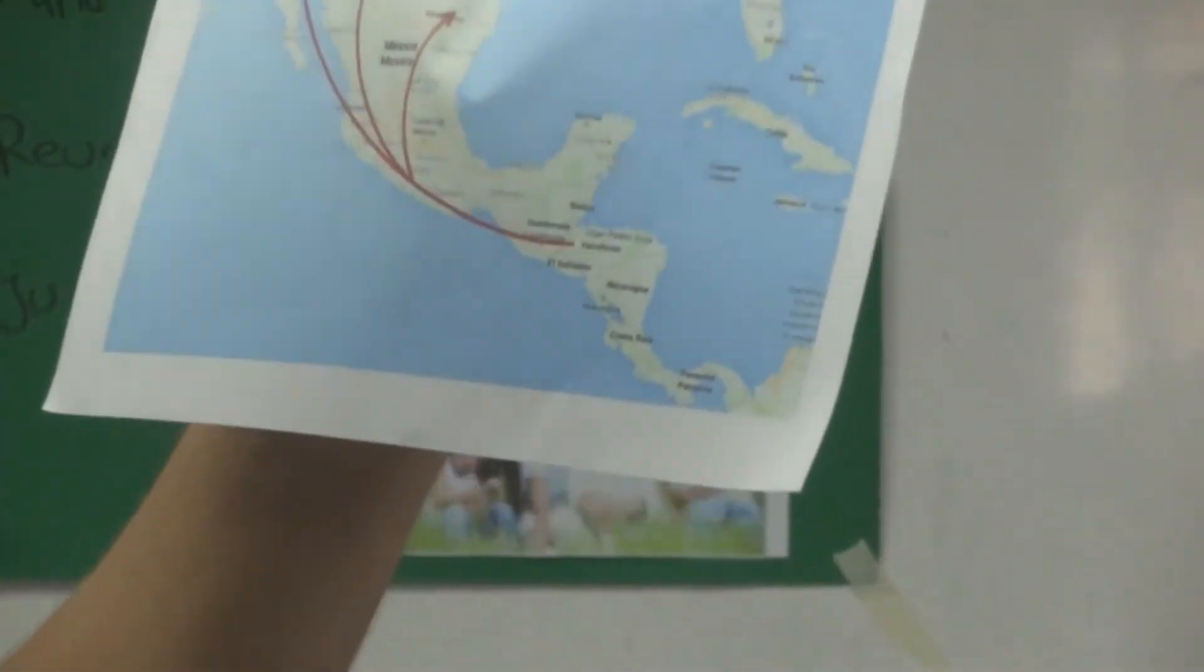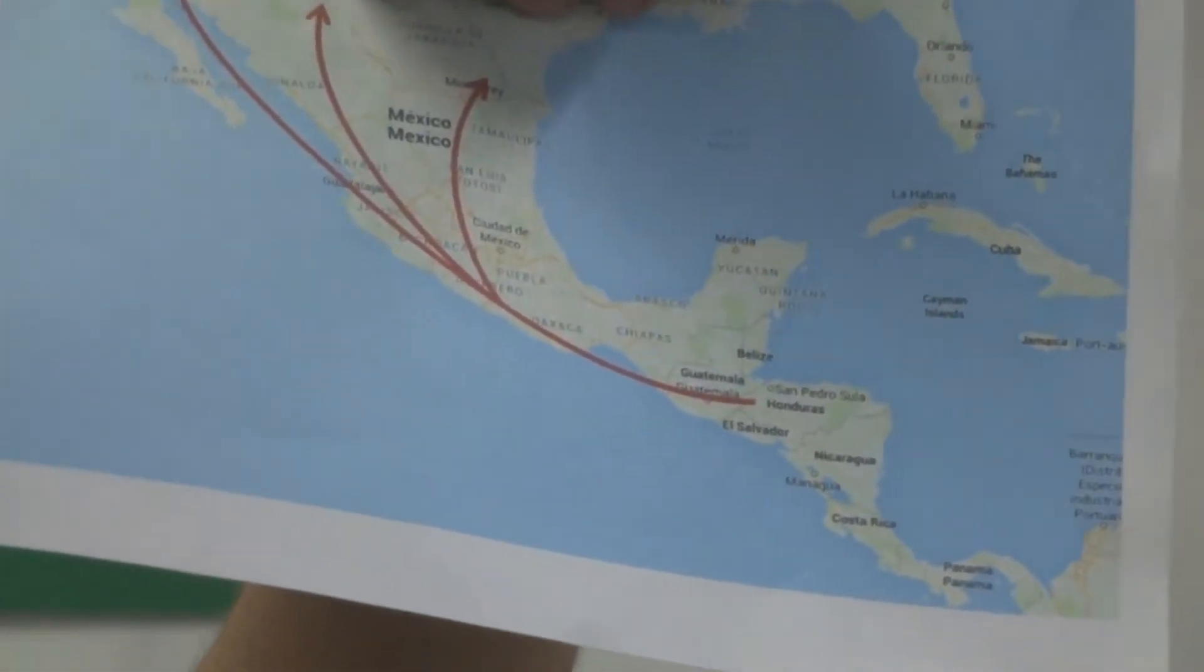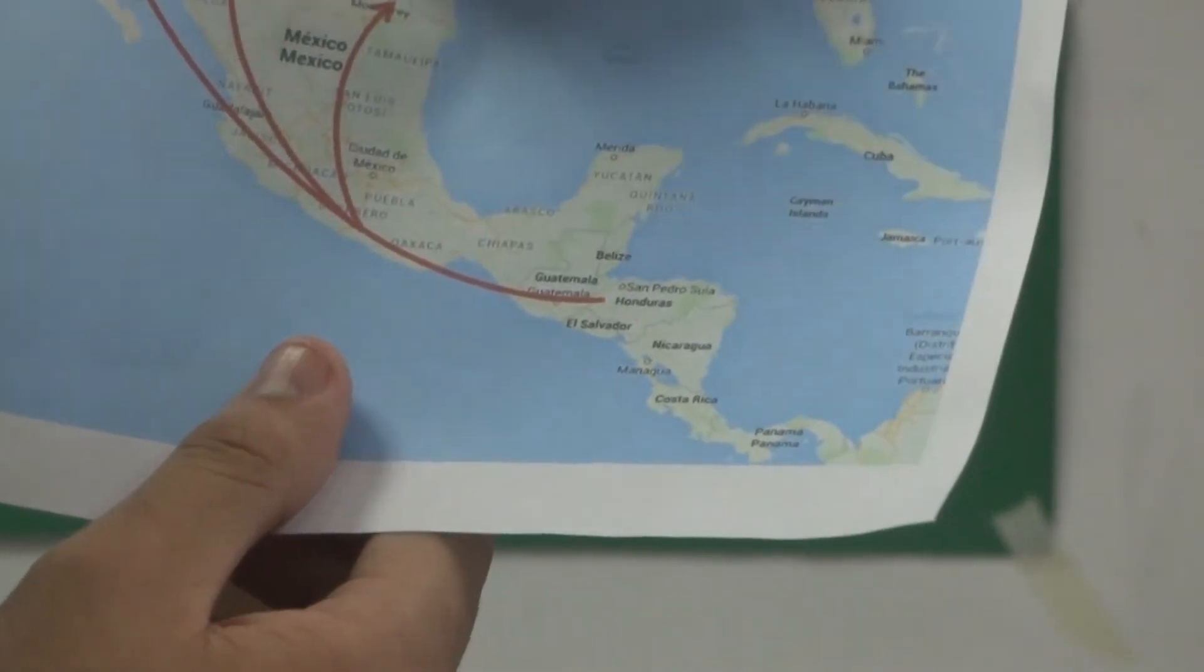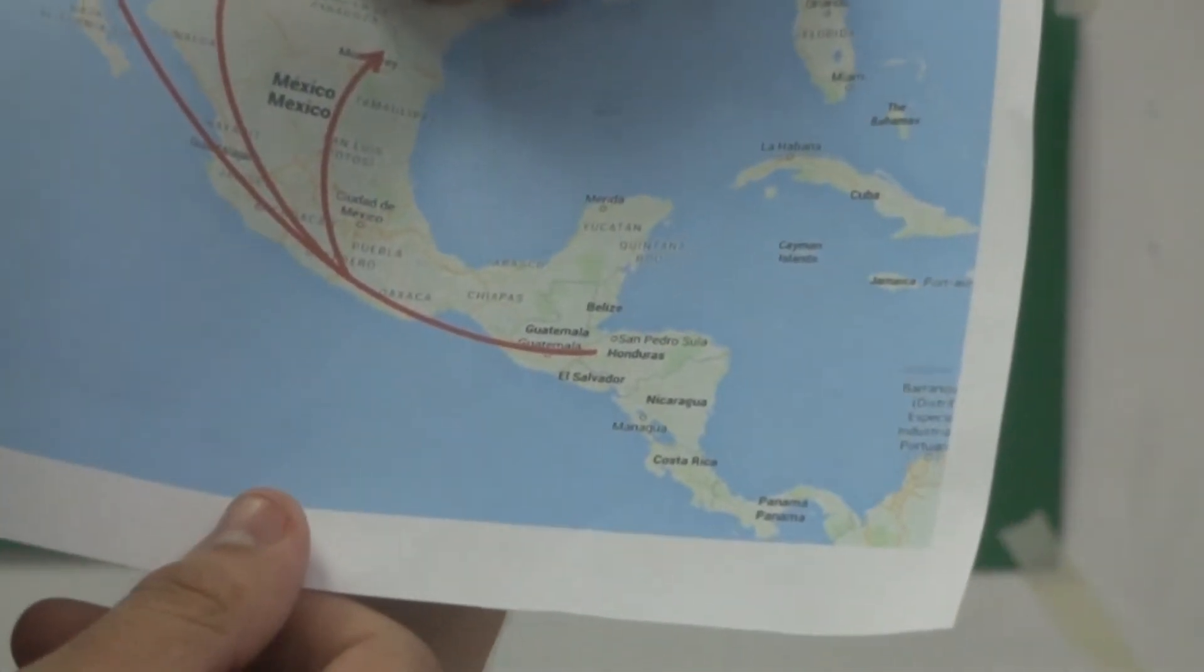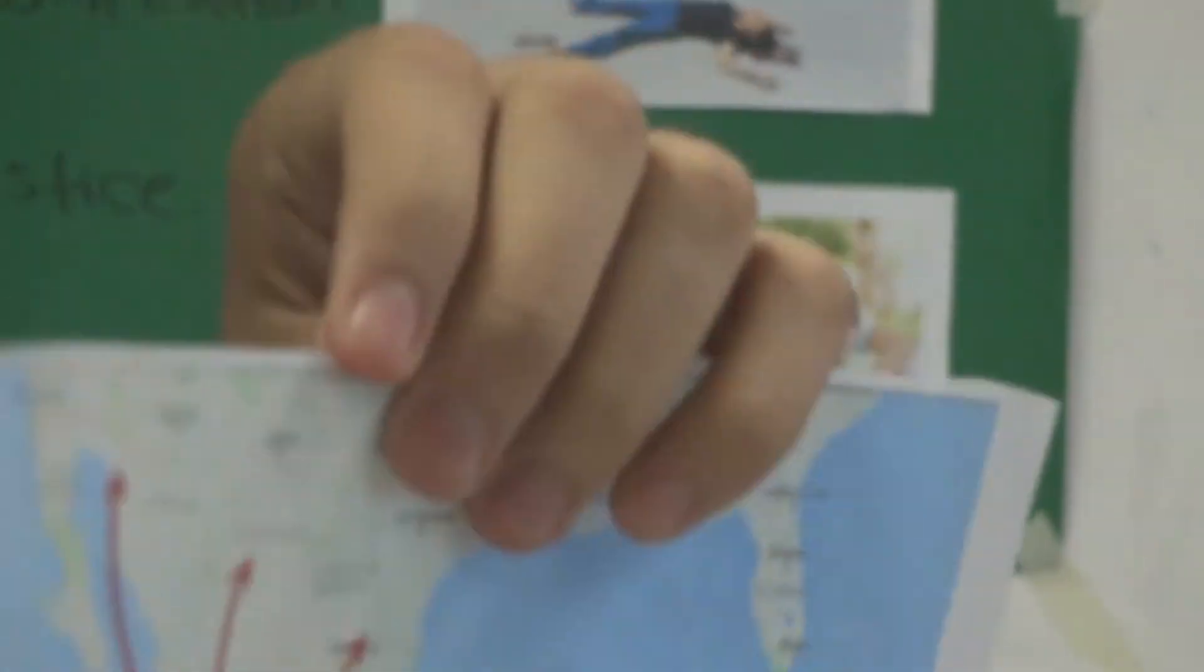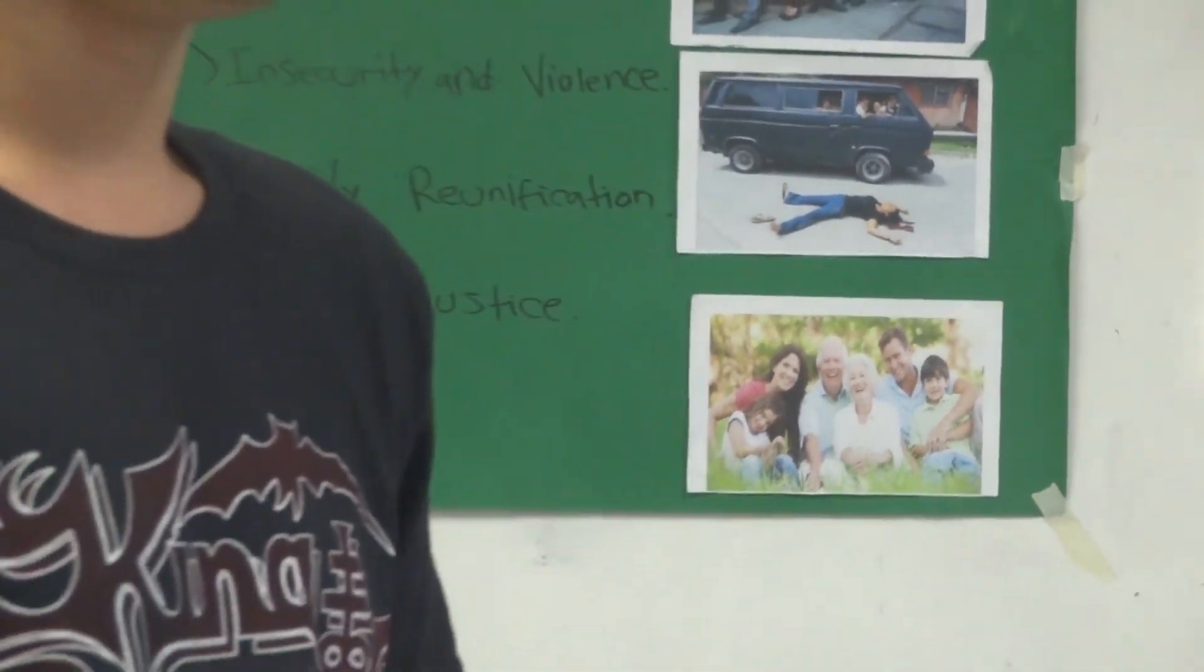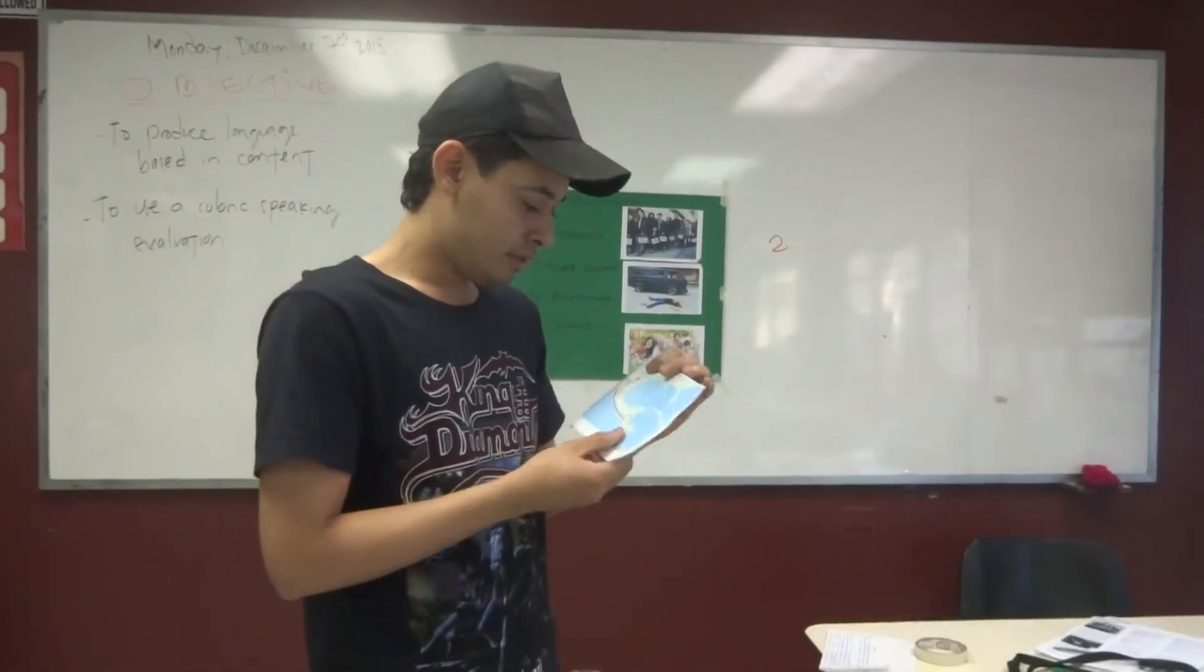Well, we are here. Guatemala is the next country. Guatemala is not big. Well, immigrants get there very, very easy. Right? We can get there by car, buses, motorcycle, whatever kind of transportation. But that's not the problem.